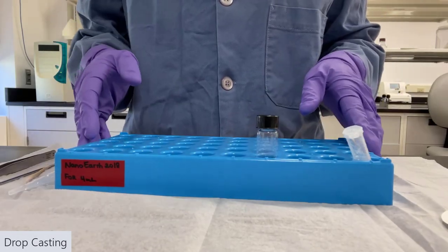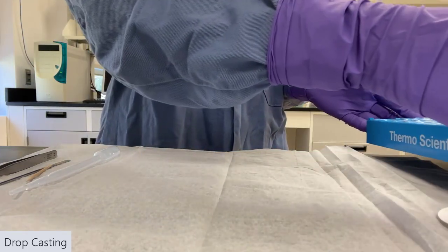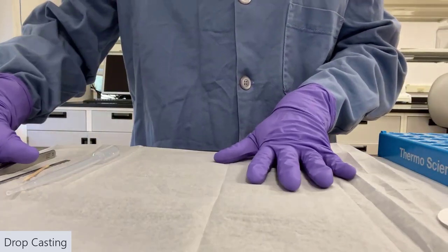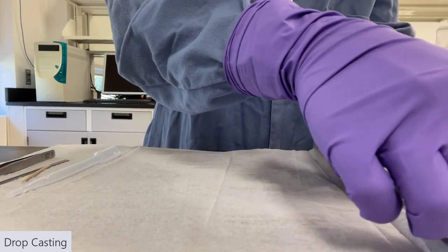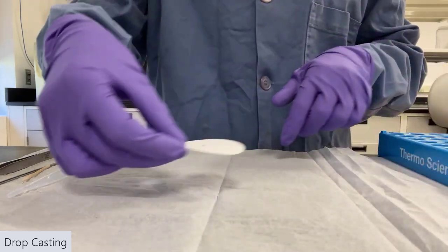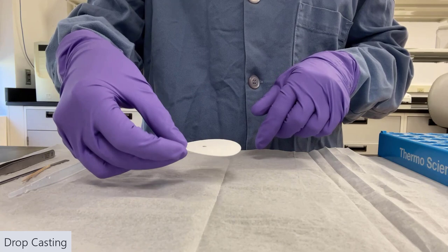After shaking or using a sonicator, we want to let the glass vial sit for a few minutes so that the larger particles will settle out. Because for TEM, we don't want any visible particles from the suspension that we're sampling.